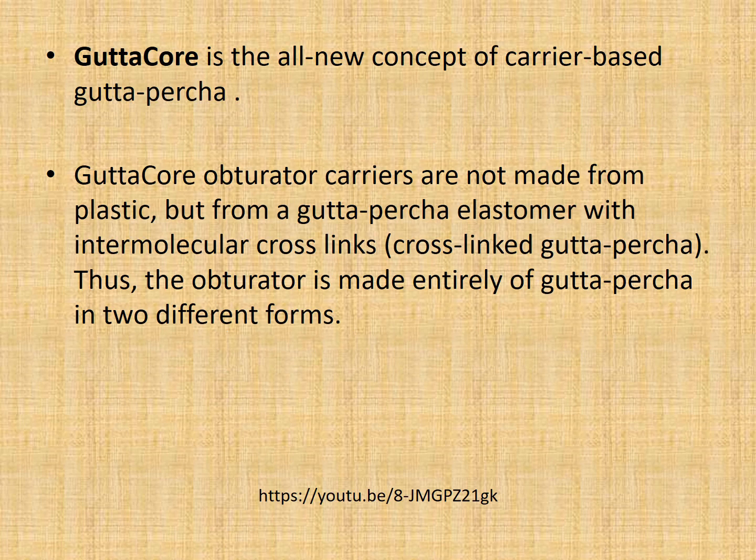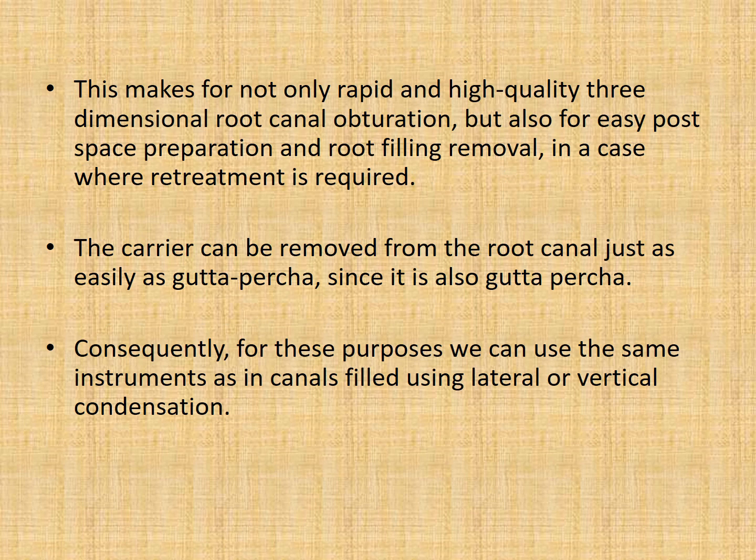A new material recently introduced is GuttaCore, a carrier-based gutta percha technique. GuttaCore obturators are not made from plastic but from gutta percha elastomer with intermolecular cross-links — that is, cross-linked gutta percha. The obturator is entirely made up of gutta percha, available in alpha and beta phase forms. This allows not only rapid and high-quality three-dimensional root canal filling but also easy post space preparation and root filling removal where retreatment is required. The carrier can be removed from the root canal just as easily as gutta percha, and the same instruments can be used as in canals filled by lateral or vertical condensation.